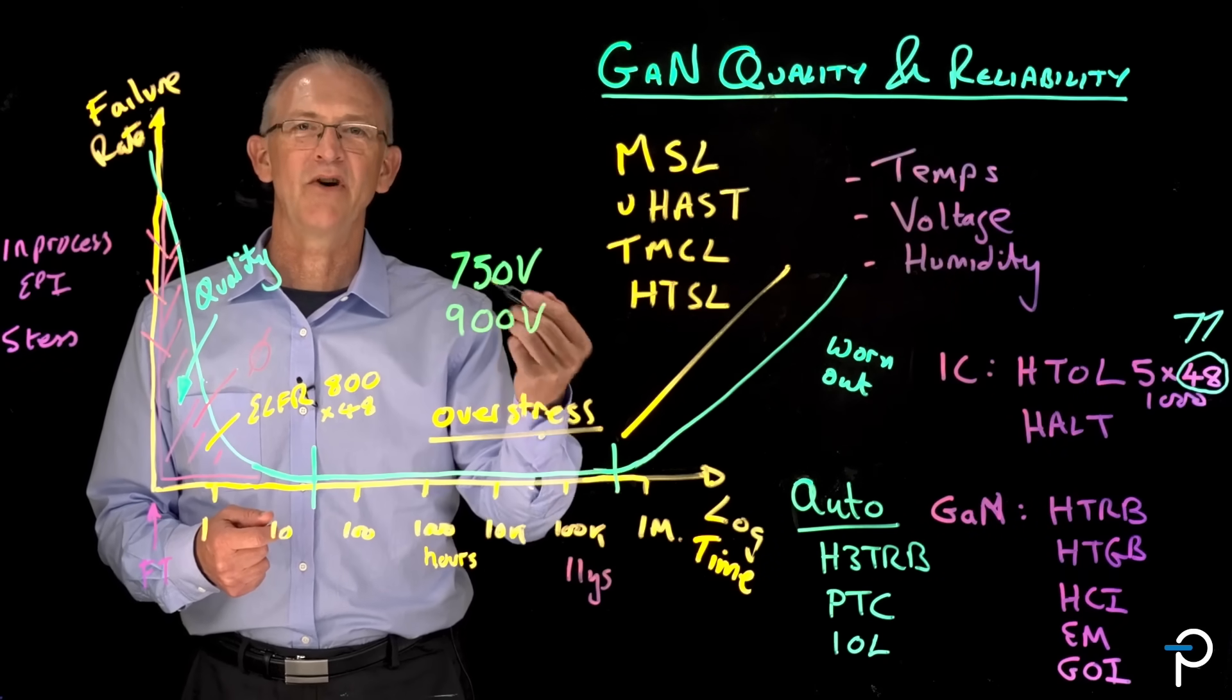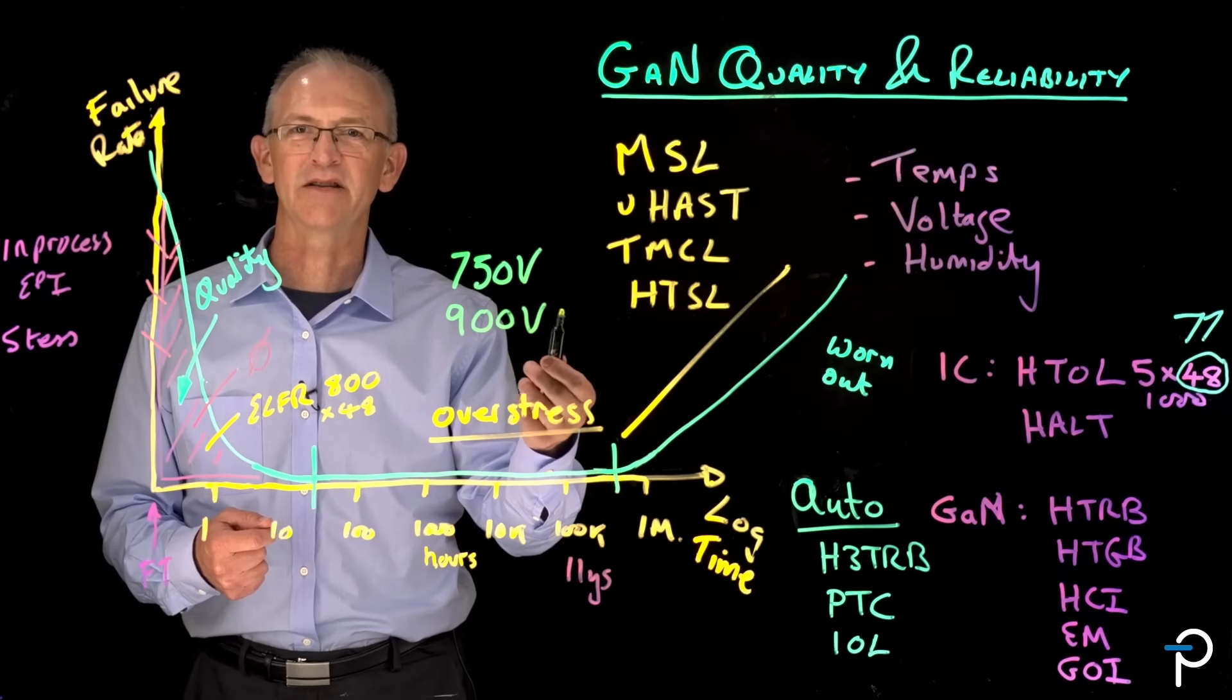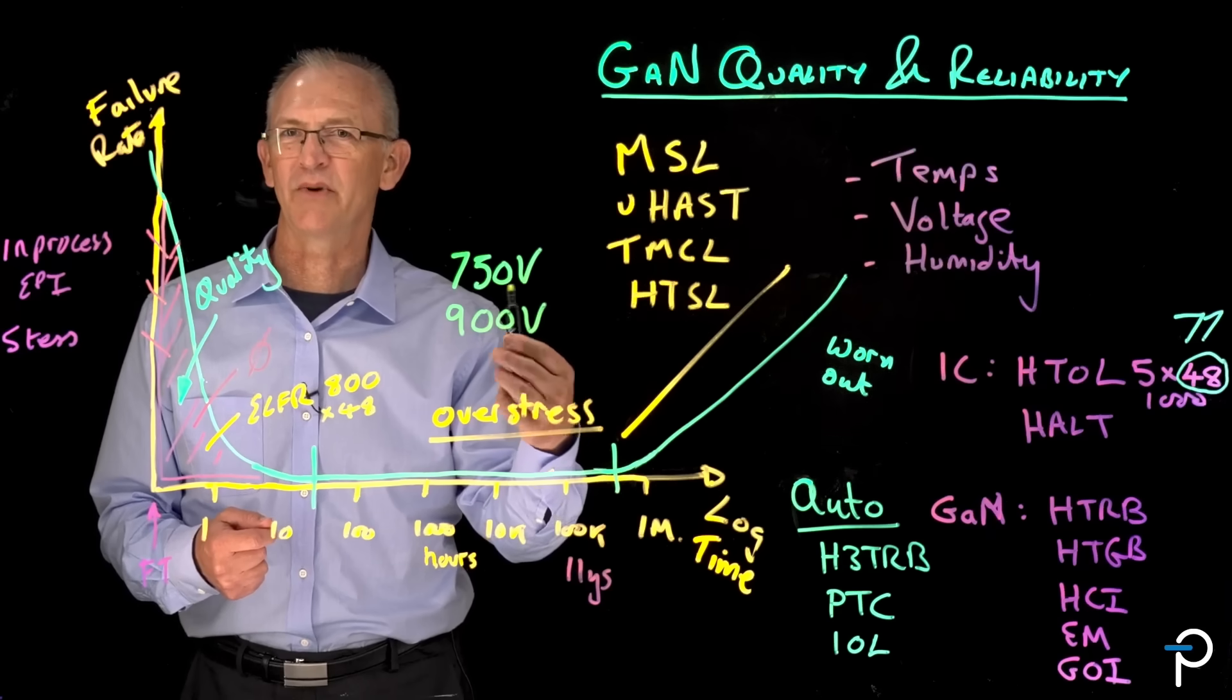But our BVs are not specified in the same way as a silicon device where you'd be talking about a breakdown voltage. So even though we talk about BV, that's not how it's set. There's a property of GaN called dynamic RDS-ON.